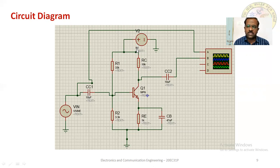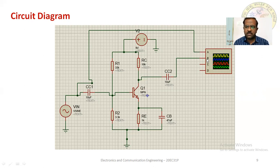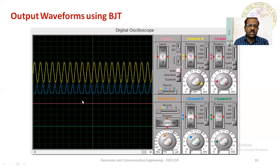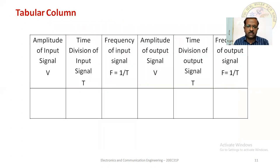I am applying a sine wave input and giving VCC = 9 V. The input signal will be viewed on the CRO at channel A, and the output signal is connected to the CRO at channel B. I will now show you the experiment visually.